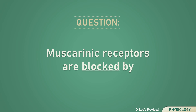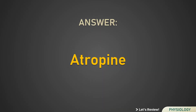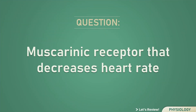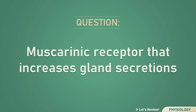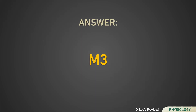Muscarinic receptors are blocked by Atropine. The muscarinic receptor subtype that increases gland secretions is M3.